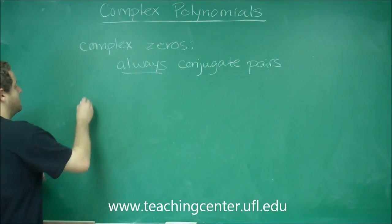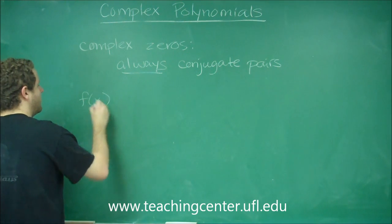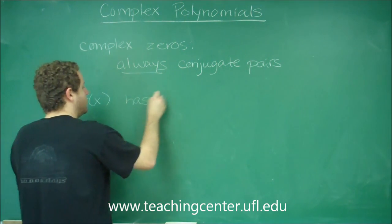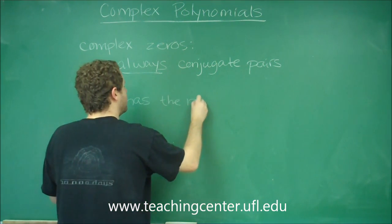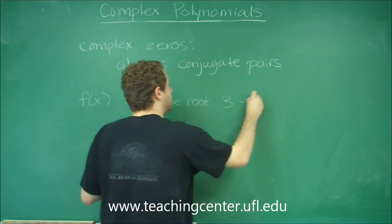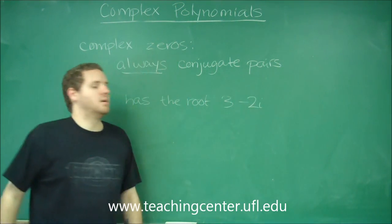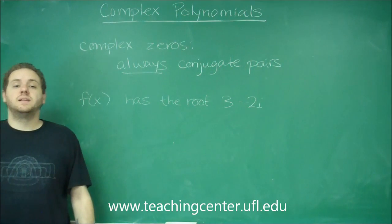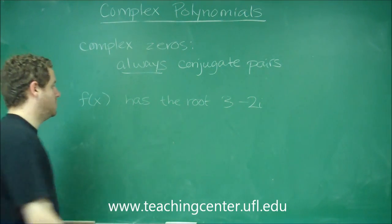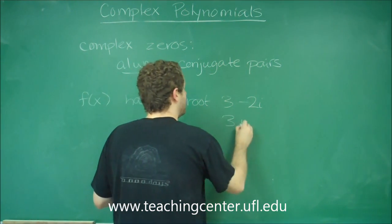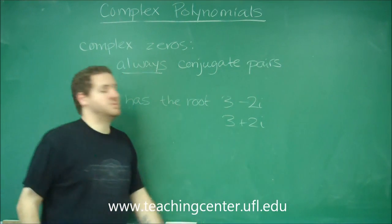For example, if you had some polynomial f(x) has the root 3 minus 2i, it also has to have its complex conjugate as a root. So you would be guaranteed that you have the root 3 plus 2i as well.